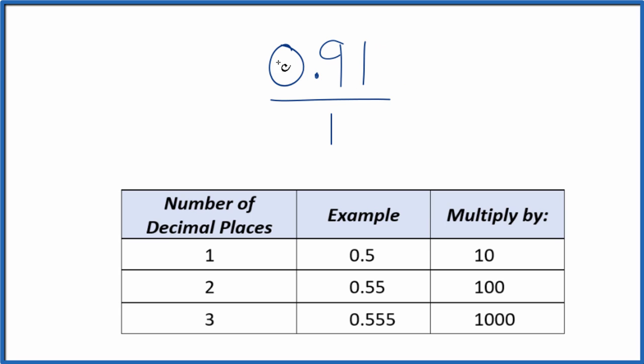I want to get this number to be a whole number, and I can see there are two decimal places. With two decimal places, I'm going to multiply it by 100. That'll give me a whole number. So we take 100 times 0.91, and we end up with 91.